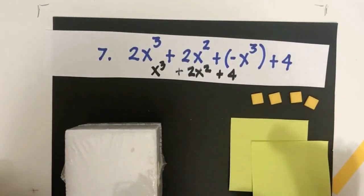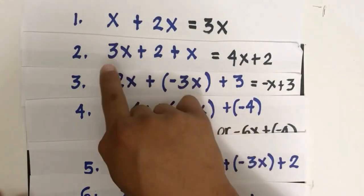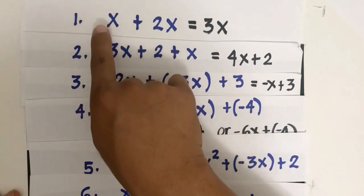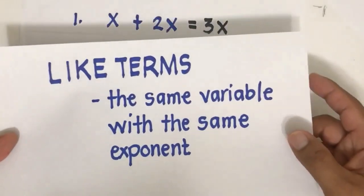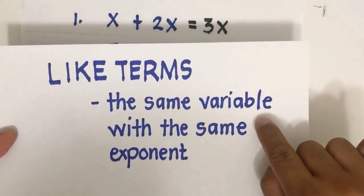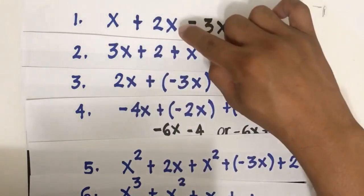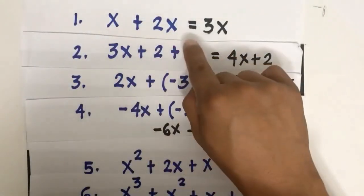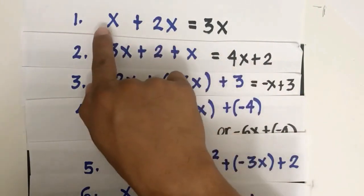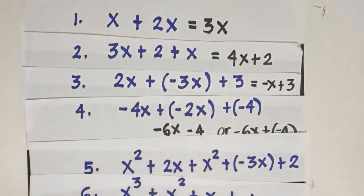Let's now develop a rule for adding polynomials based on our observations. Looking at the examples: x plus 2x gives 3x. Here, x has an understood coefficient of 1, so this is 1x plus 2x. x and 2x are considered like terms — polynomials with the same variable and the same exponent. Since both have variable x with exponent 1, we add the numerical coefficients: 1 plus 2 gives 3x.